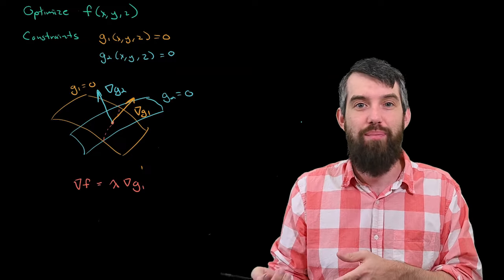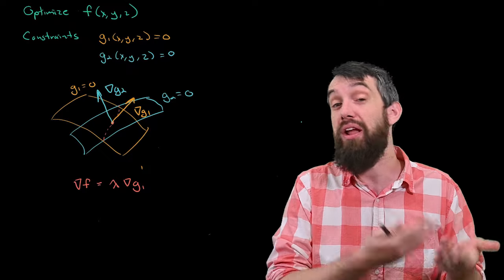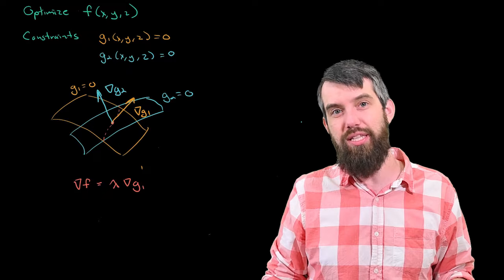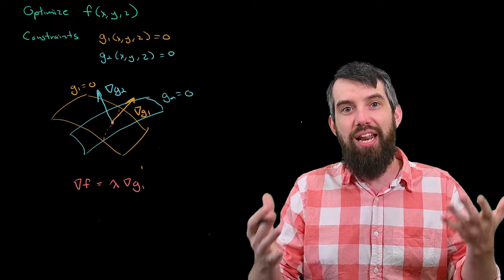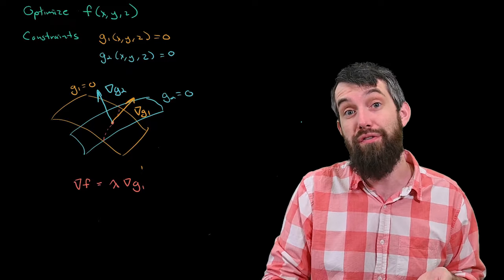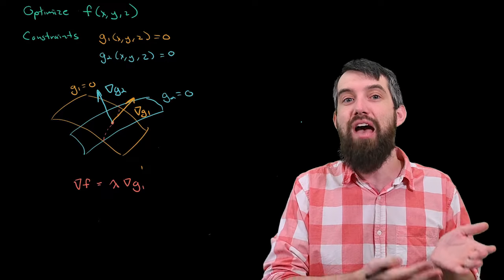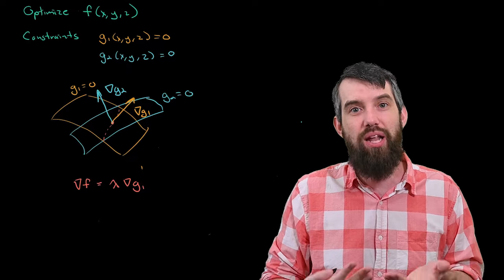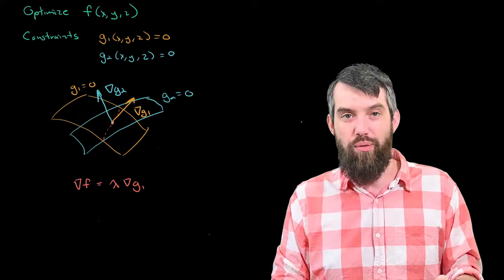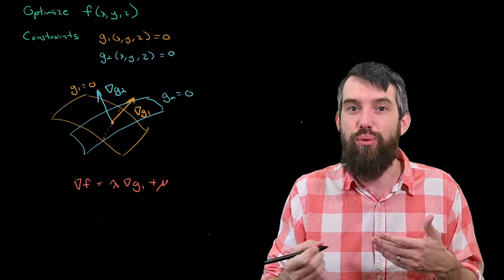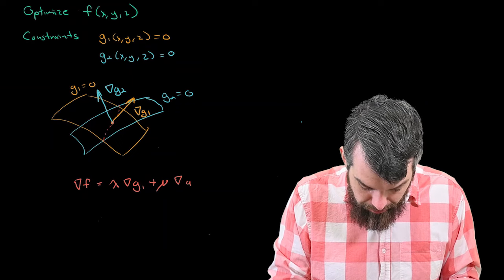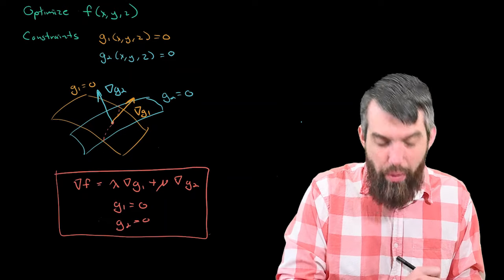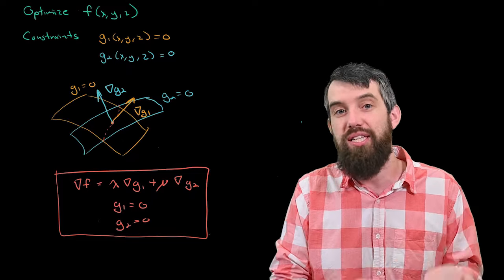These two different vectors are going to define a plane that is normal to the curve. Previously the gradient of f was going to be parallel just to the gradient of one constraint. Now the gradient of f is going to be parallel to this linear combination: lambda times the gradient of g1 plus mu times the gradient of g2. We still need g1 equal to zero and g2 equal to zero. Collectively those three equations give the Lagrange multiplier system.